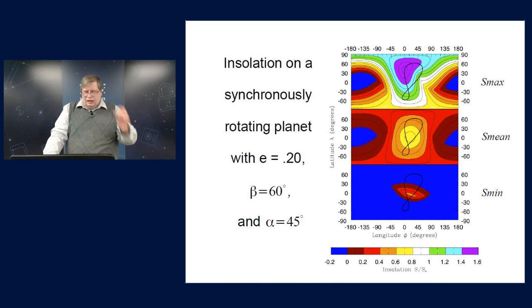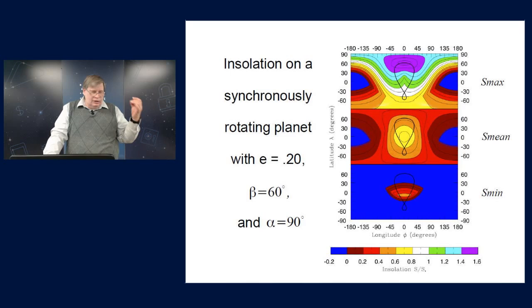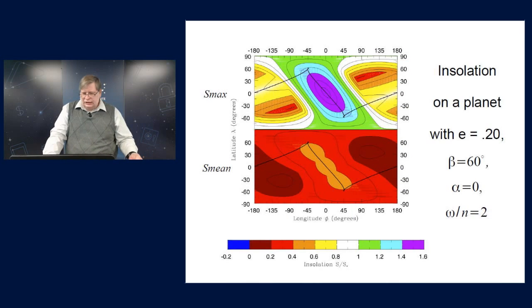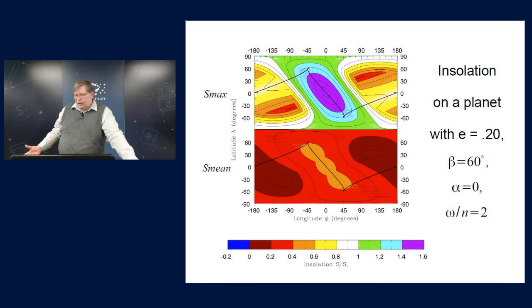Now, here is the situation where we're in a 2-to-1 resonance now. The planet is rotating twice as fast as its orbital mean motion, and that means that the entire planet gets illuminated from time to time, so the minimum insolation everywhere is 0. Every place experiences day and night, so I haven't bothered to plot that, just the maximum and the mean insolation.